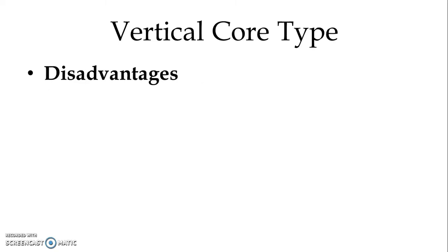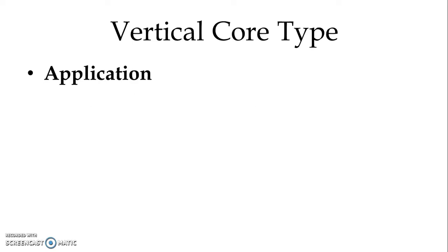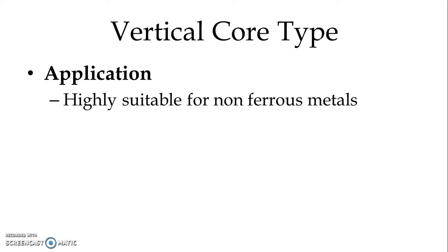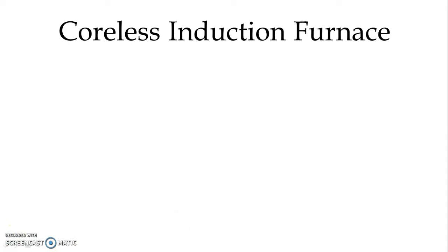There is one disadvantage of the Vertical Core type Induction Furnace: it is not suitable for intermittent operation. Regarding application, it is highly suitable for non-ferrous metals. Precise melting and refining of non-ferrous metals is possible in the Vertical Core type Induction Furnace.